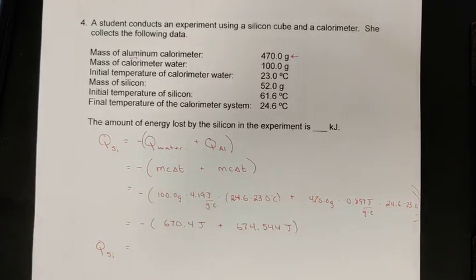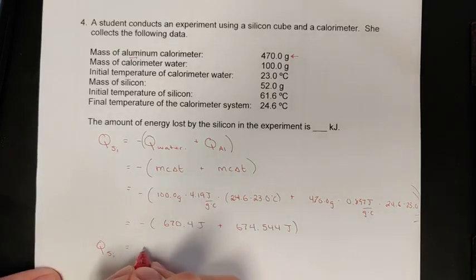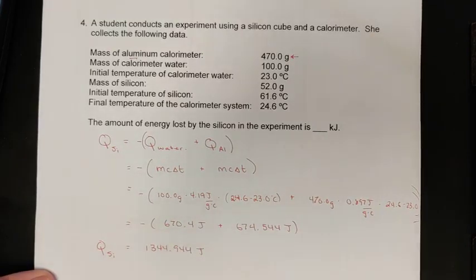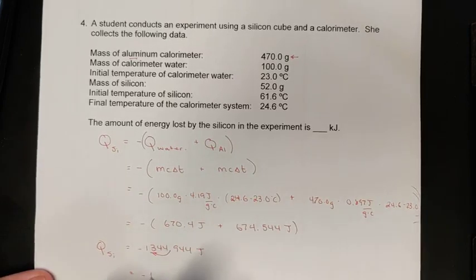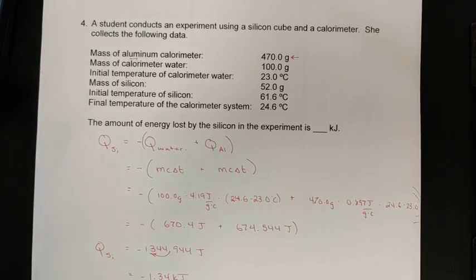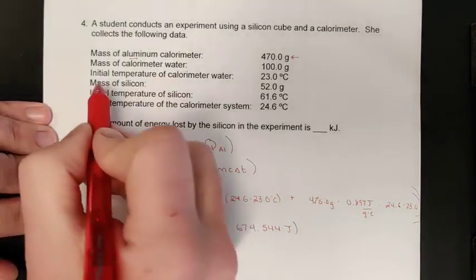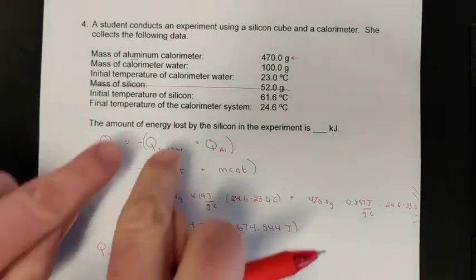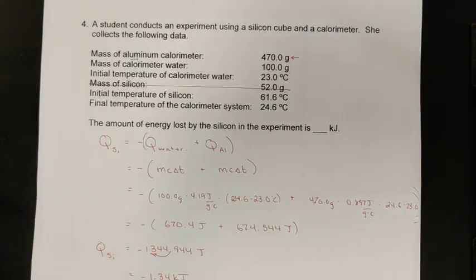Add those two numbers together, and so the energy lost by our silicon has to equal the energy gained by the aluminum and water. So we just add the 670 to the 674 here, and we get 1344.944 joules. Correct that to kilojoules by moving your decimal place three spots, and so we get negative 1.34 kilojoules of energy lost by the silicon. I'm noticing that I do have a typo here—the mass of silicon should not be in this problem to highlight the point that I have multiple q's. I'll fix that for the notes on D2L, so you won't see the 52 grams. Just ignore that.